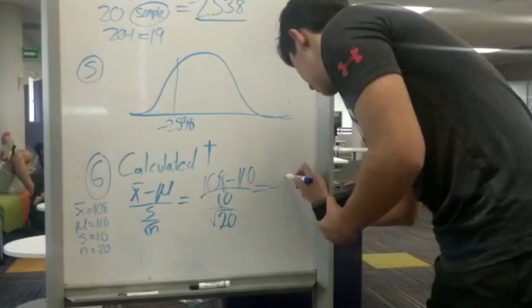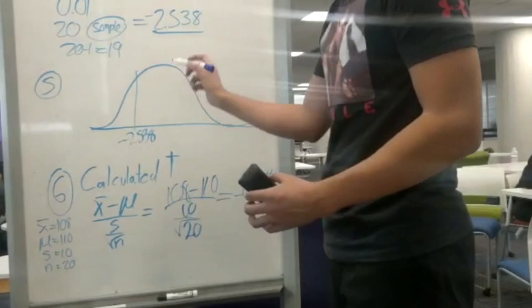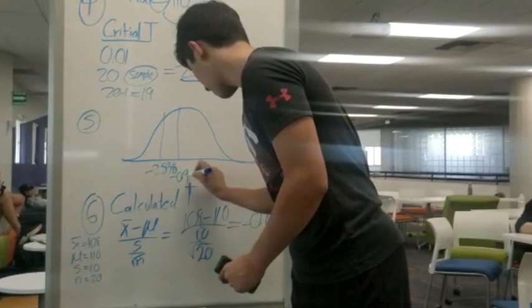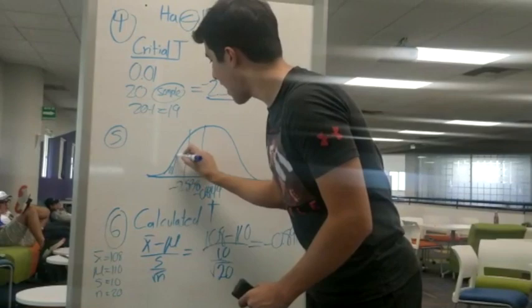That will be our calculated T. So, we're going to place it in the sketch, making it here at negative 0.8944, making it out of the rejection zone.